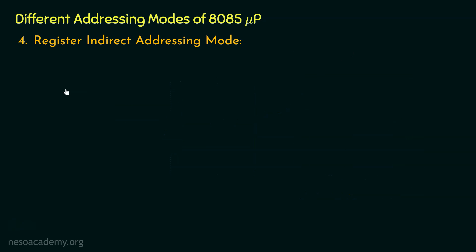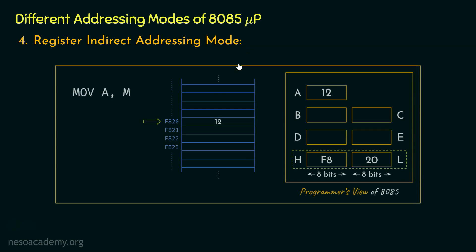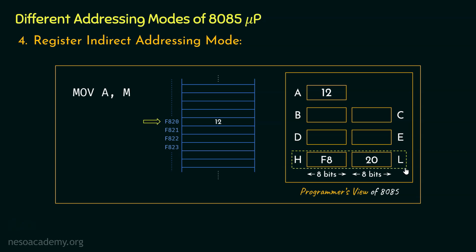Let's now learn about the next — that is the register indirect addressing mode. The execution of the instruction MOV A,M is an example of that. If you notice, within the instruction we are not mentioning the source register. Rather, we are mentioning a memory location which is stored by this register pair. Therefore, after the execution of this instruction, the data will be loaded within the accumulator register, but we never mentioned the register pair which is storing the address in the first place. So within the instruction, using the alphabet M, we are indirectly addressing the register pair HL. So this instruction falls under the register indirect addressing mode.